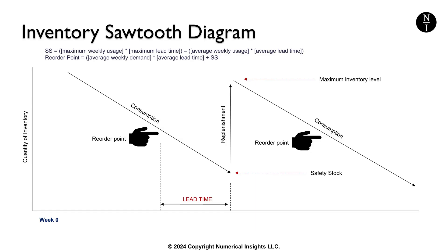Here's how to read it. The x-axis is time, likely in weeks or months. The y-axis is the inventory level, which is your quantity in, say, units. The slope of the line downward is consumption of inventory. If this chart is for a finished good, that consumption would be sales. If this chart is for a raw material or component, consumption represents something like usage in production.